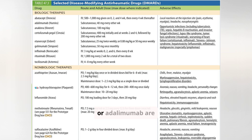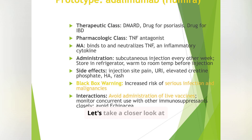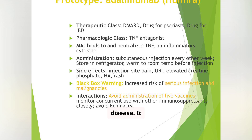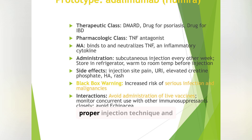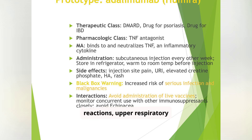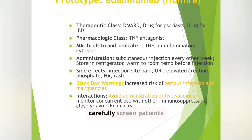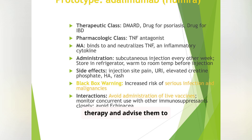Biologics like etanercept or adalimumab are injected every one to two weeks. Let's take a closer look at adalimumab, a TNF antagonist used in rheumatoid arthritis, psoriasis, and inflammatory bowel disease. It works by neutralizing TNF, a key inflammatory cytokine. It's administered subcutaneously every other week. Patients need to be educated on proper injection technique and storage. Common side effects include injection site reactions, upper respiratory infections, and headaches. Importantly, adalimumab carries a black box warning for increased risk of serious infections and malignancies. We need to carefully screen patients for latent infections like tuberculosis before initiating therapy and advise them to avoid live vaccines.